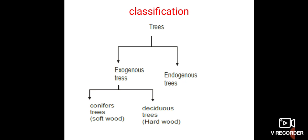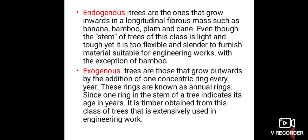Wood can be classified according to the type of tree. There are two types of trees: Exogenous trees and Endogenous trees. Endogenous trees are those that grow with a longitudinal fibrous mass, such as banana, bamboo, plum, and cane.